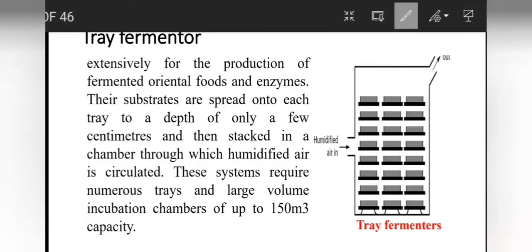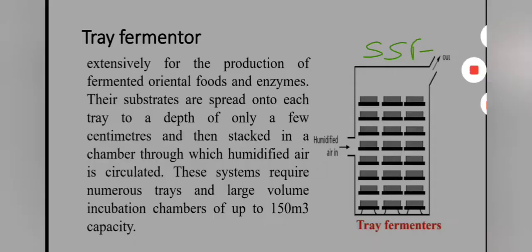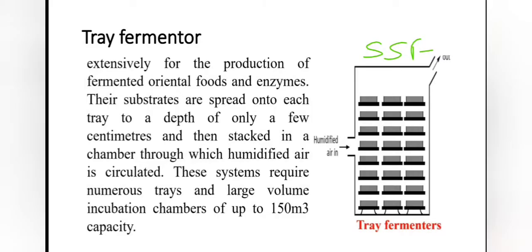The next type is the tray fermenter, which is used in solid state fermentation. They are extensively used for the production of fermented oriental foods and enzymes. Substrates are spread onto each tray to a depth of only a few centimeters, then stacked in a chamber through which humidified air is circulated. These systems require numerous trays and large volume incubation chambers, up to 150 cubic meter capacity.